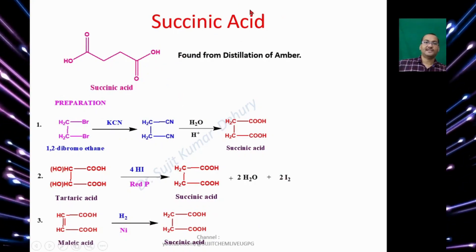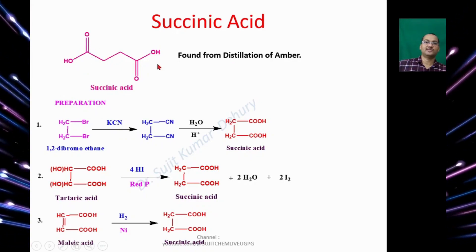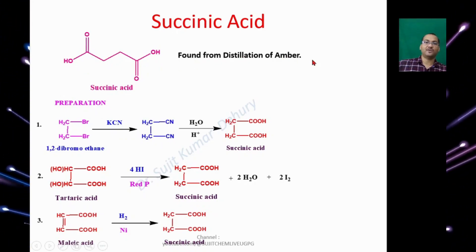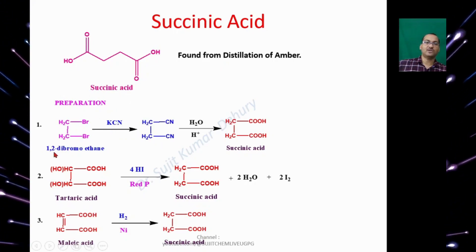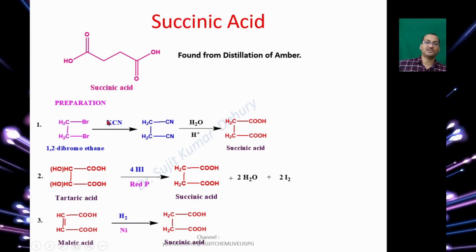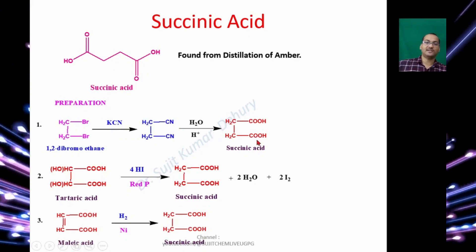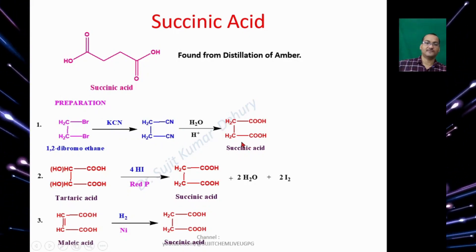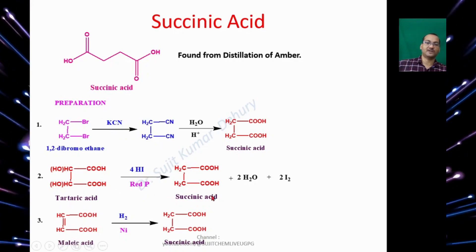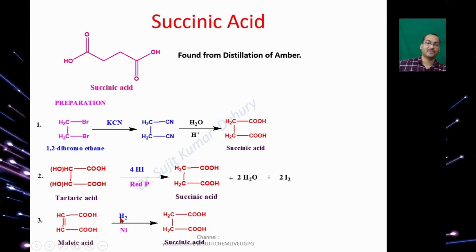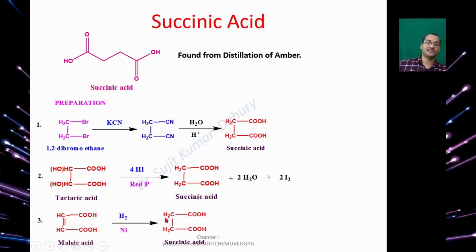Succinic Acid has the formula (CH₂)₂(COOH)₂ and is found from distillation of amber. To prepare succinic acid, start with 1,2-Dibromoethane, treat with potassium cyanide to get the dinitrile derivative, which upon hydrolysis gives succinic acid. Similarly, Tartaric Acid reacting with HI and red Phosphorus gives succinic acid, and Maleic Acid upon reduction with Hydrogen and Nickel also gives succinic acid.